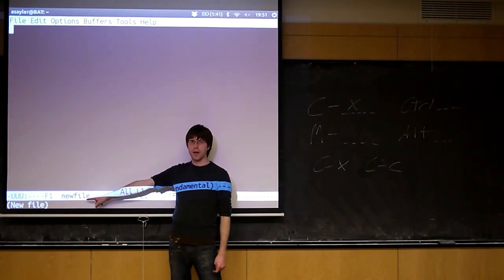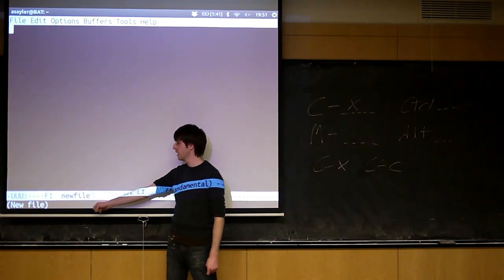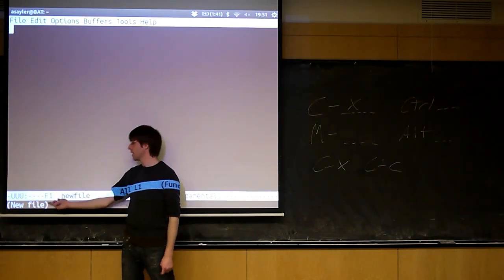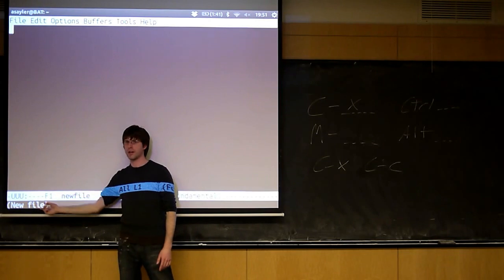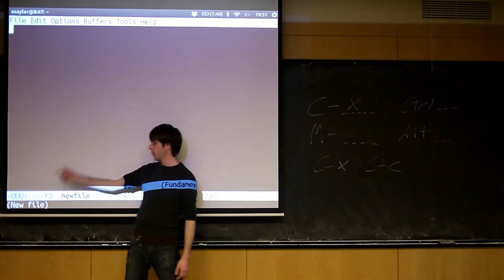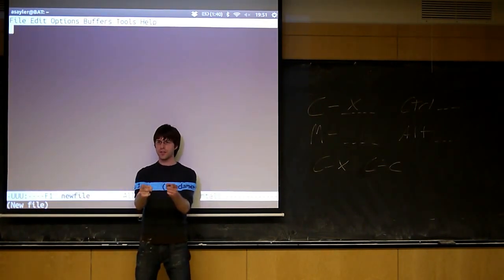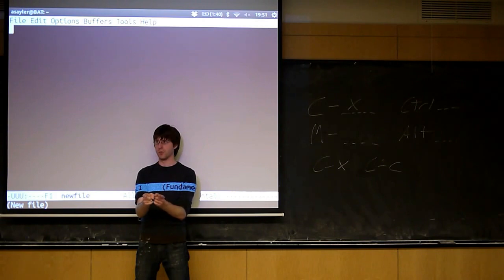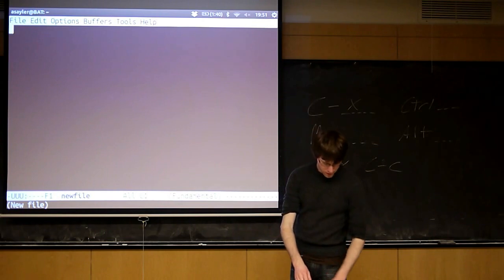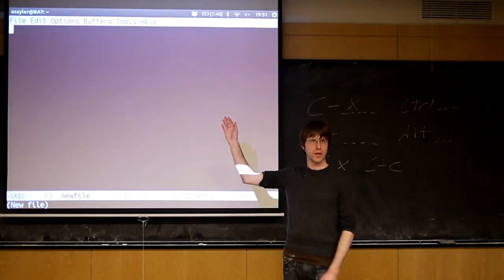This here will always tell you the name of the file you're currently in. Obviously we're in a file called new file right now. This little feedback down here is reminding us that the file we tried to open doesn't exist, so it created a new file. If we opened a file that already existed, this wouldn't say new file. Questions on getting into an empty file, opening a file, and so forth?